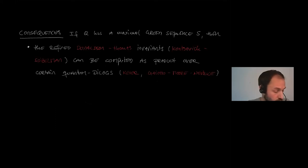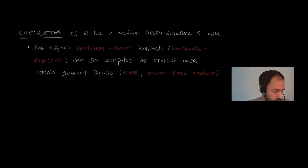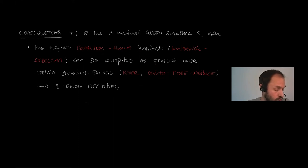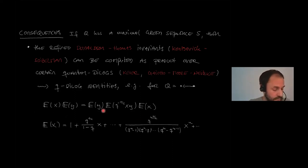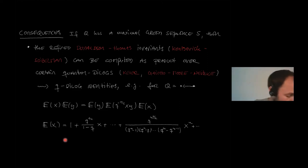There are other consequences: the refined Donaldson–Thomas invariants due to Kontsevich–Soibelman can be computed as a product over certain quantum dilogarithms, where the factors are indexed by the mutation steps in the maximal green sequence. This is due to Keller and also appears in work of Gaiotto, Moore, and Neitzke. In particular, we obtain quantum dilogarithm identities — for example, for the A2 quiver we get the identity E(x)·E(y) = E(y)·E(q^{-1/2}xy)·E(x), where E is the quantum dilogarithm.